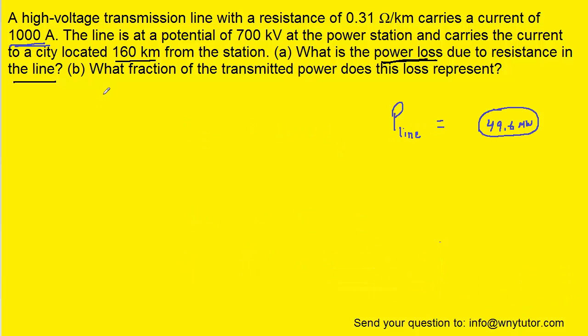Now to solve the question in part B, we actually have to figure out how much total power the entire station is producing. And for that we can use a slightly different formula. We have the current multiplied by the potential difference. And the reason we want to use that formula is because we are given the potential at the power station. So we're going to take that potential and the current that it is outputting in order to calculate the power produced by the station.